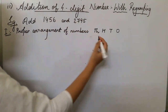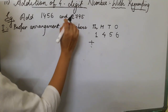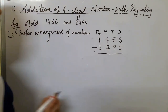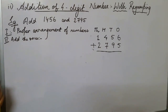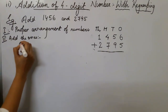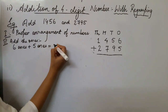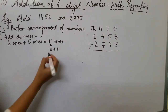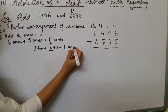We write 1,456 — one thousand, four hundred and fifty-six — and below it, with the addition symbol, 2,795 — two thousand, seven hundred and ninety-five. After proper arrangement, the next step is to add the ones: six ones and five ones gives us eleven ones.